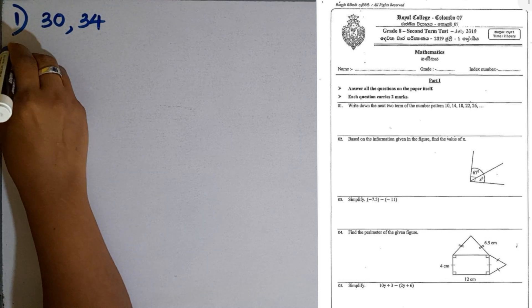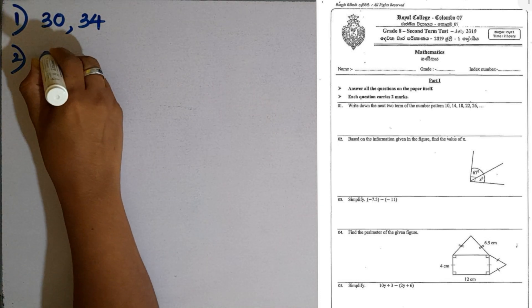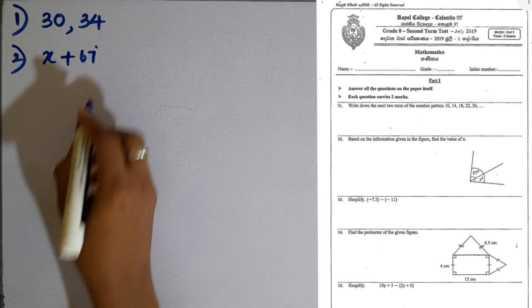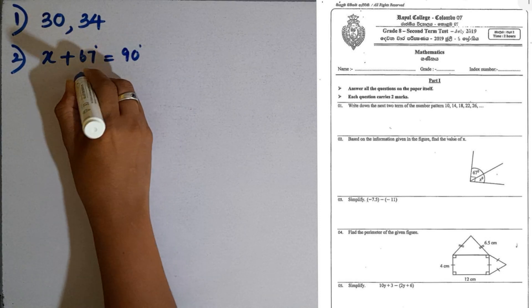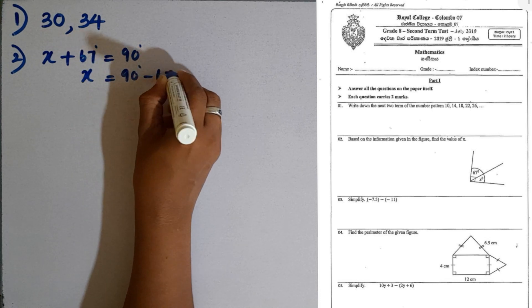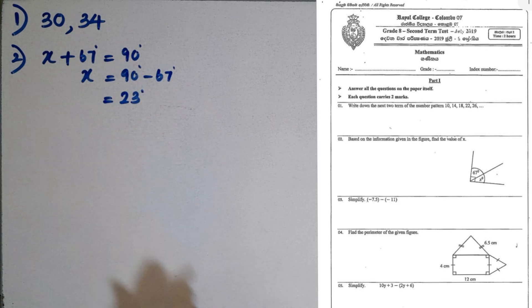Question number 2. Based on the information given in the figure, find the value of x. The sum of the two angles is marked as 90 degrees. So we can write x plus 67 equal to 90. Then x is equal to 90 minus 67. That is 23 degrees.